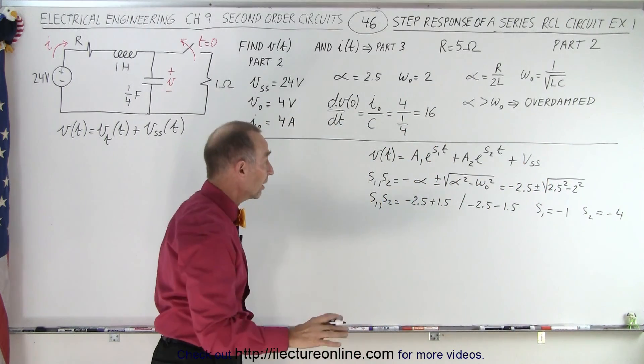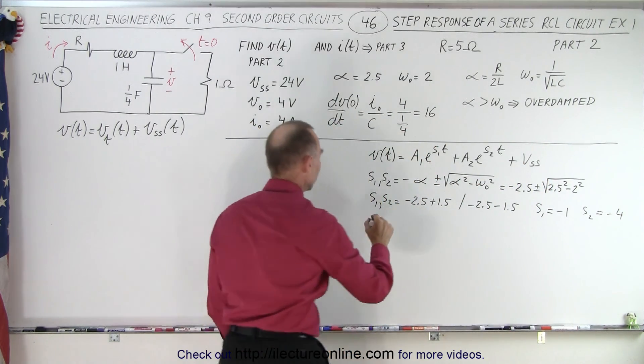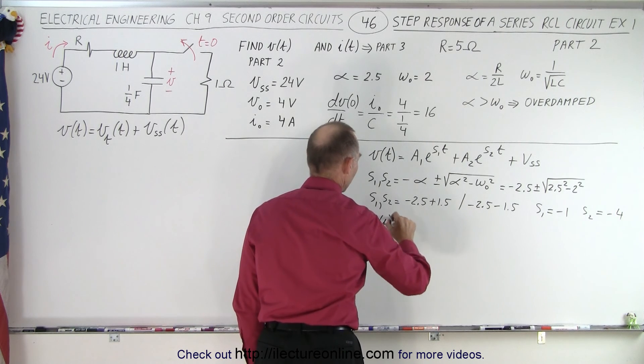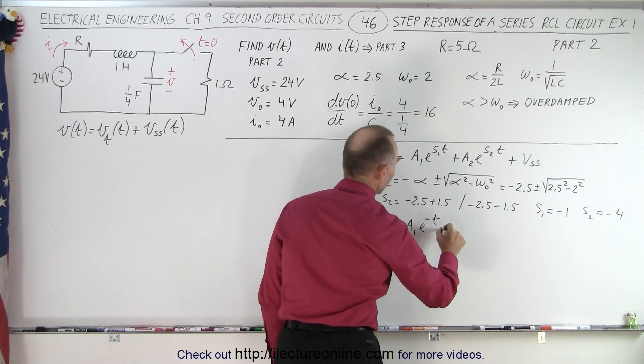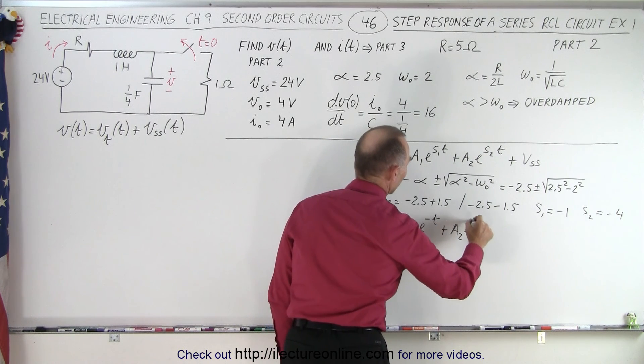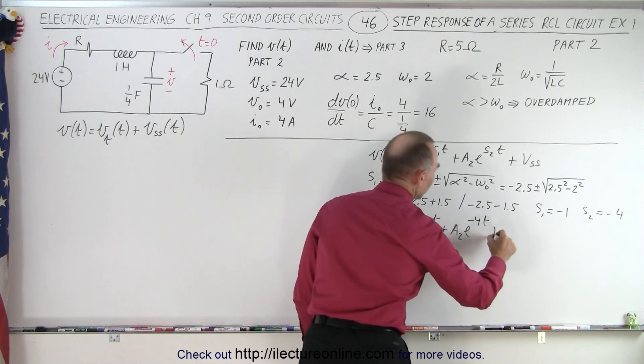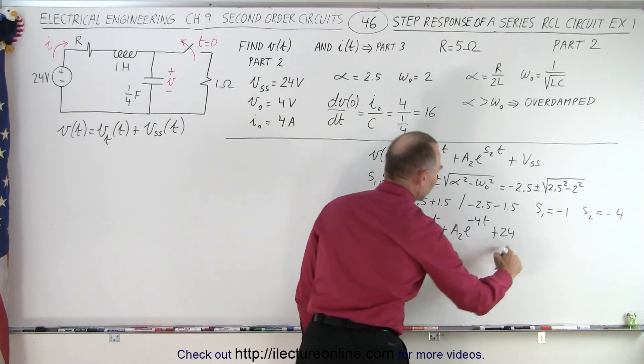Now that we know the values for S1 and S2, we can plug those into the equation, and we can say that the voltage with respect to time is equal to A1 E to the minus T plus A2 E to the minus 4T plus 24 for the steady state voltage.